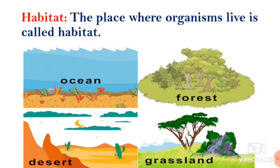Several kinds of plants and animals live in the same habitat. Observe here — ocean, forests, desert, grassland. These are some habitats where many kinds of plants and animals live. Now, which are the types of habitat?